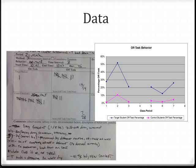I wanted to create a behavior support plan for Thomas, so I took a fair amount of data. On the left you see momentary interval data where every three minutes I tallied if he was on or off task, and compared that to some control students. On the right is a graph of that data over several weeks. You can see that Period 2 was rough for him — that was math. Then I used this data to create a behavior pathway.